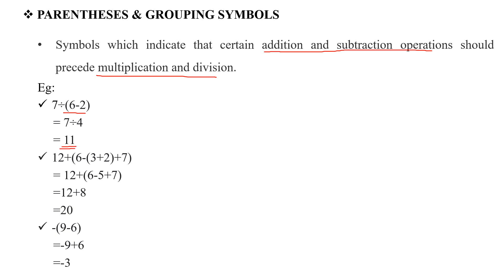Next we go to the next question: 12 plus bracket 6 minus v, into the bracket 3 plus 2, close the second bracket, plus 7, close the first bracket. When the first bracket is the innermost bracket, we will solve this.